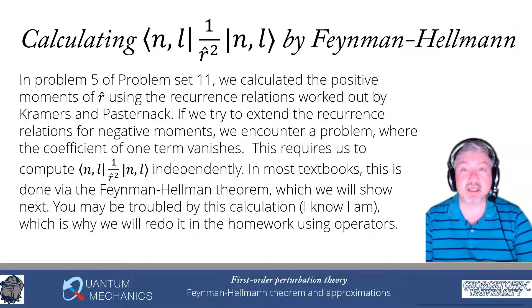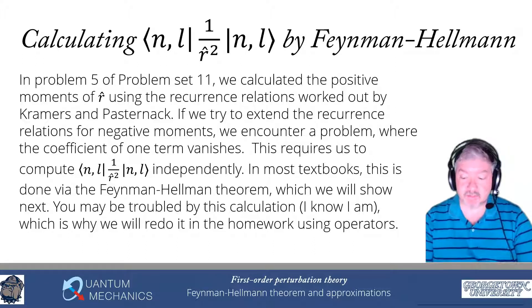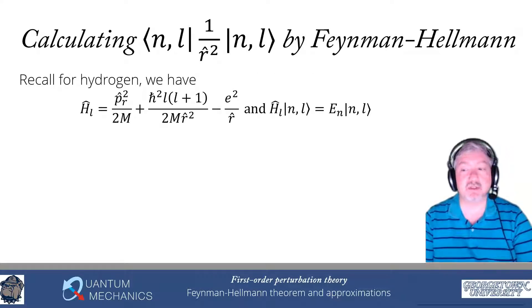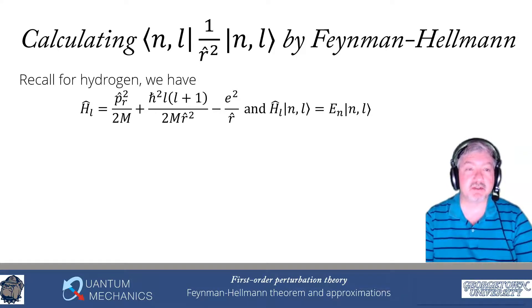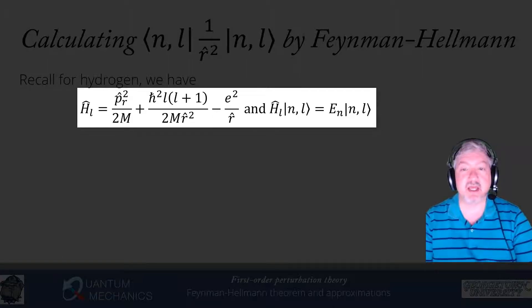You may be troubled by this calculation — there's an assumption I find somewhat fishy, and that's why we're going to redo it in the homework using operators, where we'll find the result is correct. Recall that for hydrogen we can write the Hamiltonian in each angular momentum sector, H sub L, as the radial momentum squared divided by 2m, plus h-bar squared times L(L+1) over 2m R squared, minus e squared over R. The energy eigenfunctions satisfy H_L acting on the state |n,L⟩ equals E_n times |n,L⟩.